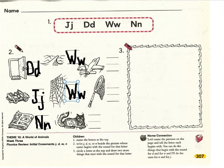Next picture. Dog. What sound do you hear at the beginning of dog? D-og. I hear the letter D. D says D. Please write a capital D and a lowercase d on the handwriting line.